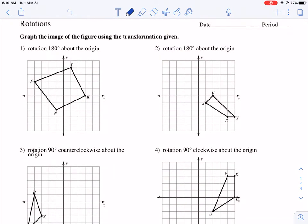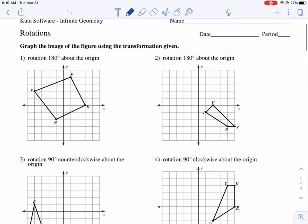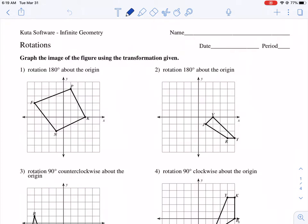The first question asks us to do a rotation of 180 degrees about the origin. There's a couple things we need to understand about rotations before we proceed.